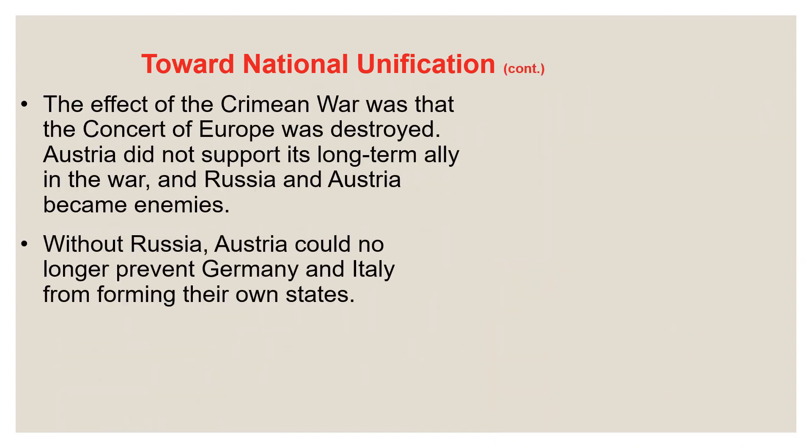The effect of the Crimean War was that the Concert of Europe was ultimately dismantled. Austria did not support its long-term ally Russia in the war, and Russia and Austria ultimately became adversaries — important leading into World War One, when Russia and Austria would be on opposite sides. Without Russia, Austria could no longer really prevent Germany and Italy from forming their own states. So we have unification movements happening finally in both Italy and Germany as we move into the later half of the 19th century.